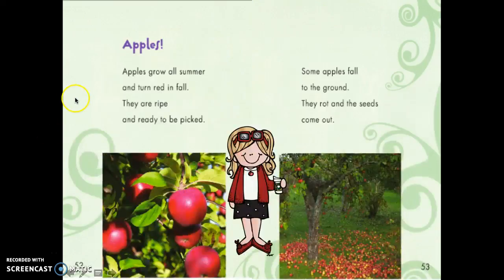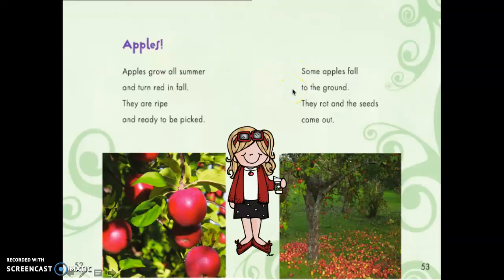Let's look at this section. Apples. Apples grow all summer and turn red in fall. They are ripe and ready to be picked. Some apples fall to the ground. They rot and the seeds come out.